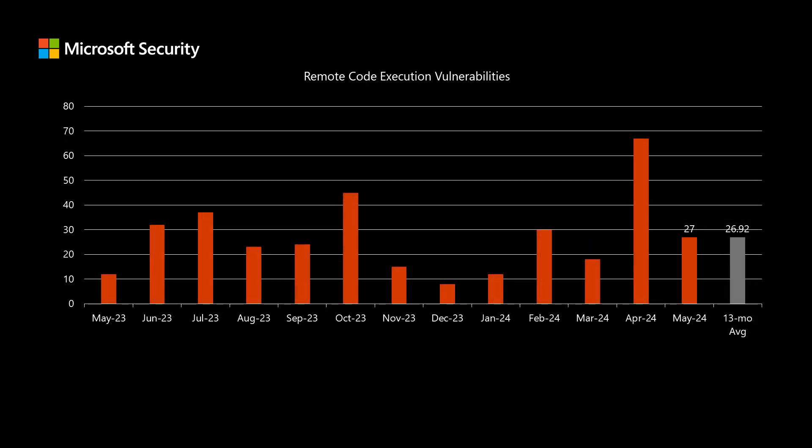I'll talk about remote code execution vulnerabilities, where we're right at our average. We have 27 remote code execution vulnerabilities in today's release, and we've been averaging just under 27.